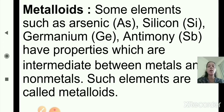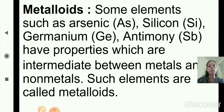The examples of metalloids are arsenic, silicon, germanium, and antimony. These elements are called metalloids because they show both the properties of metals and non-metals — they are intermediate between metals and non-metals.